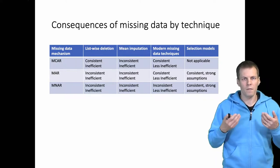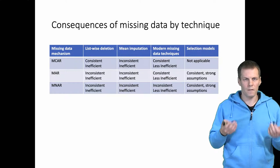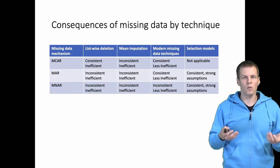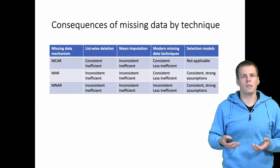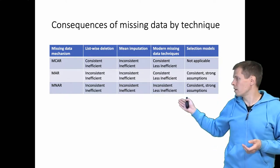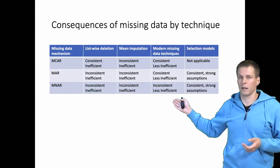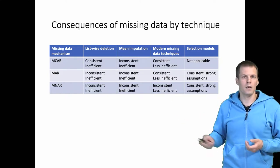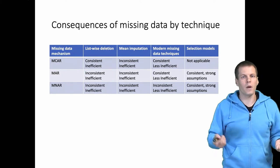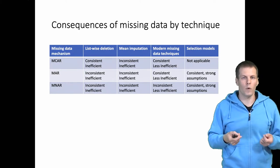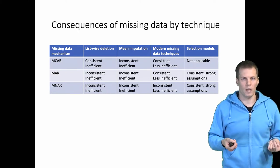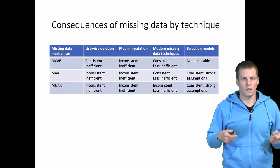So the consequences depend on the pattern, the mechanism, and which technique you apply. Generally, the safest thing to do is to apply modern missing data techniques, and it is not always as complicated as Woolridge implies.